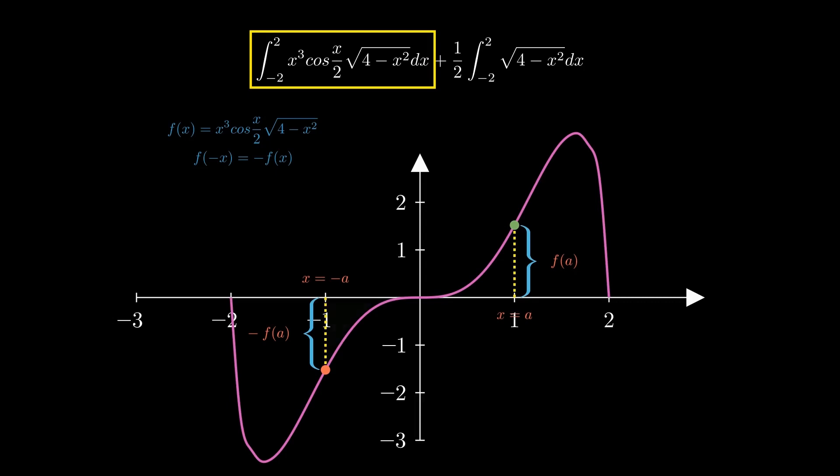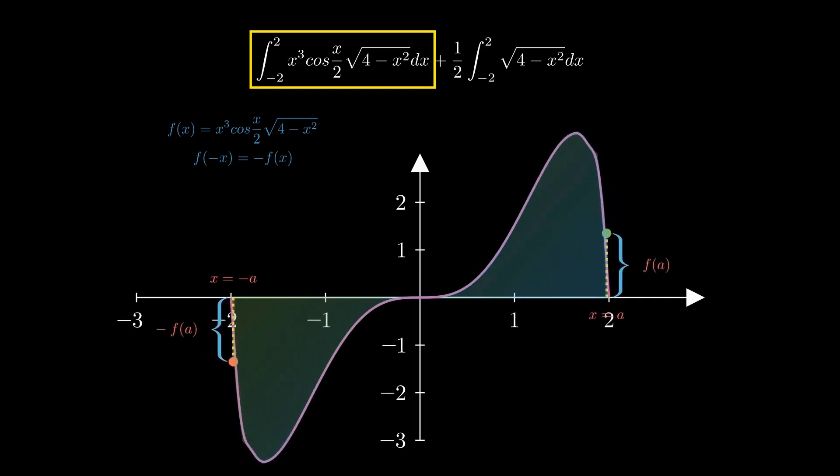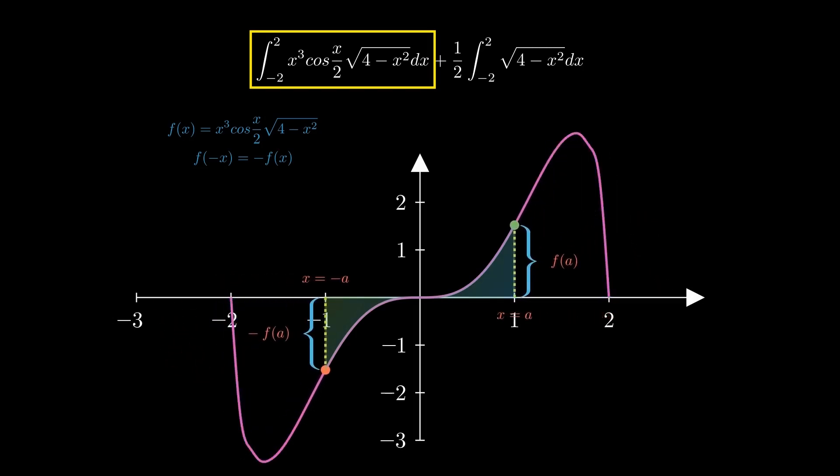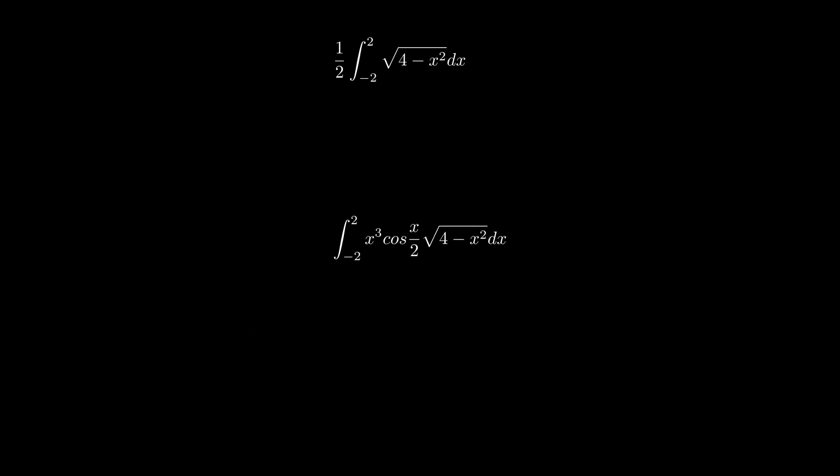The area from x equals minus a to 0 is negative, while the area from x equals 0 to a is positive, with the same magnitude. This means that the integral or the area from any x equals minus a to x equals a is zero. Knowing this crucial property of odd functions, we can say that the integral of this function from minus 2 to 2 is zero.